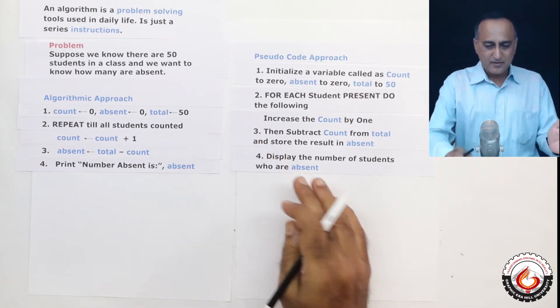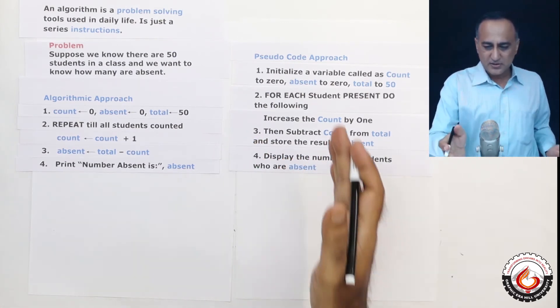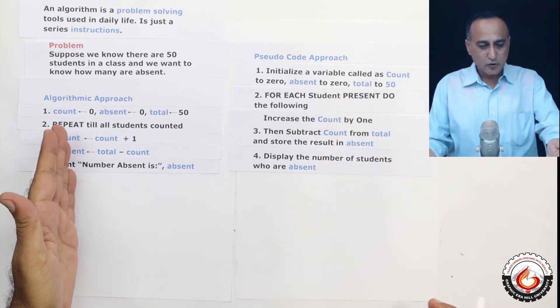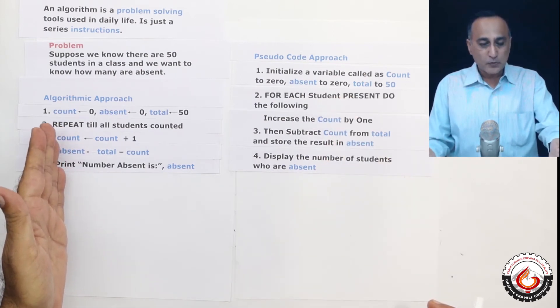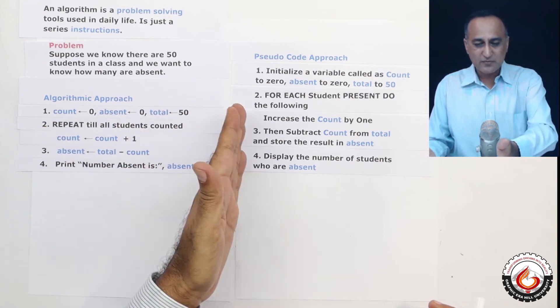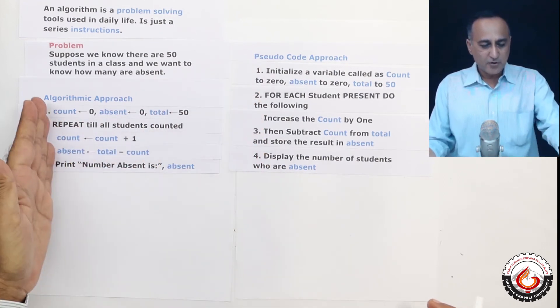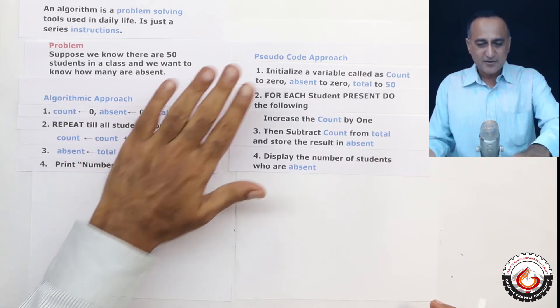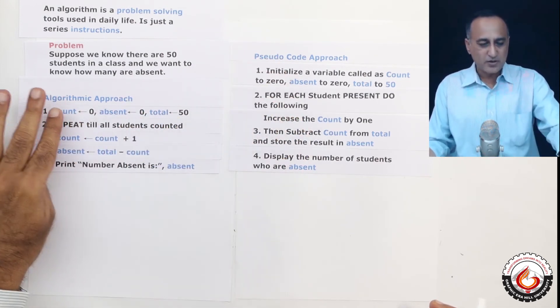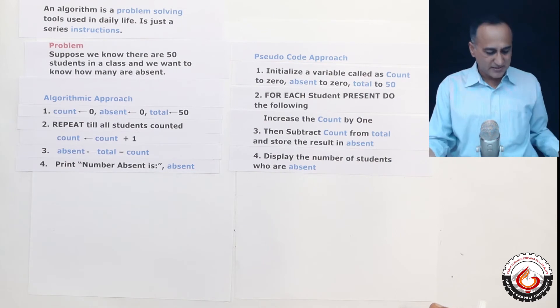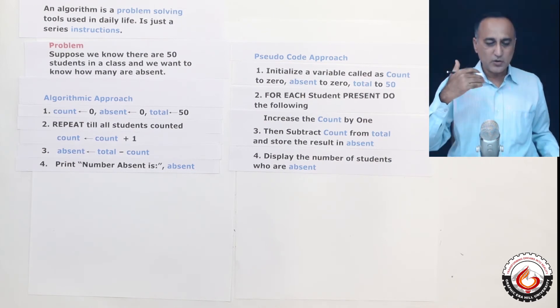So if you compare, there are similar steps in both. This is much more English like, this is a lot more closer to a programming language. So if you're discussing with a person who's not familiar with the programming language, use this approach. If you're wanting to write programs, first understand it or write it in this way, convert it into an algorithm, and then you can easily convert this into a program.